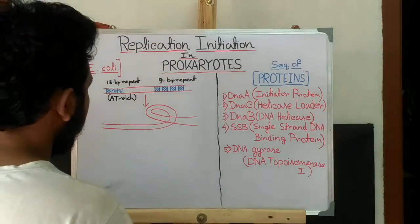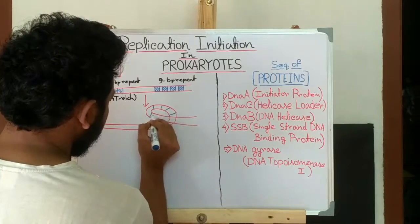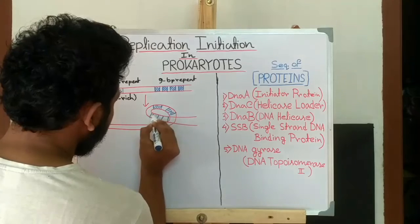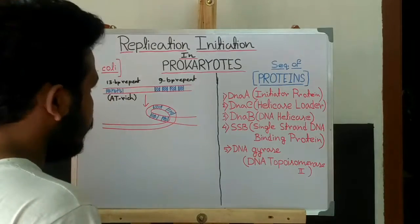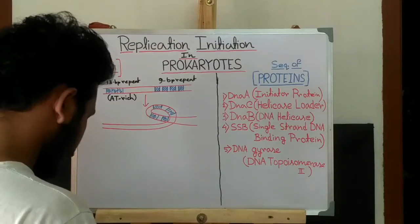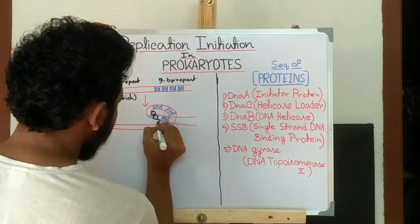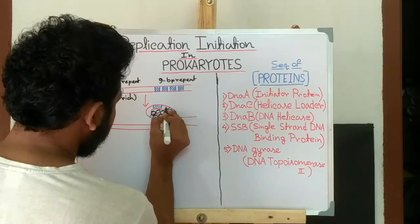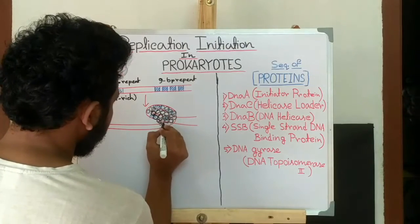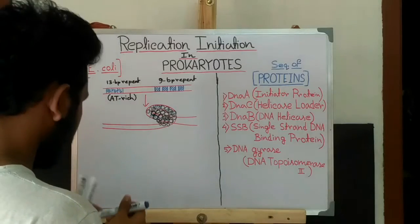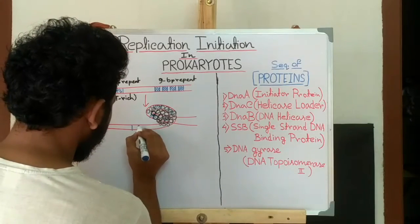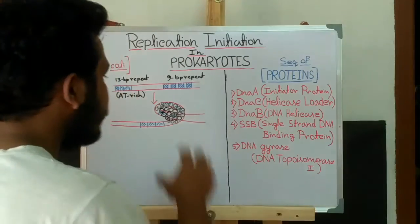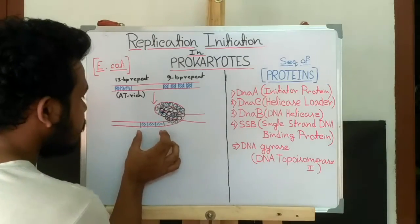These are the 9-mer repeats and DnaA protein binds there. Then 13-mer repeats present there. Now the binding of DnaA to the 9-mer repeats creates a torsional stress in the AT-rich region of 13-mer repeats.